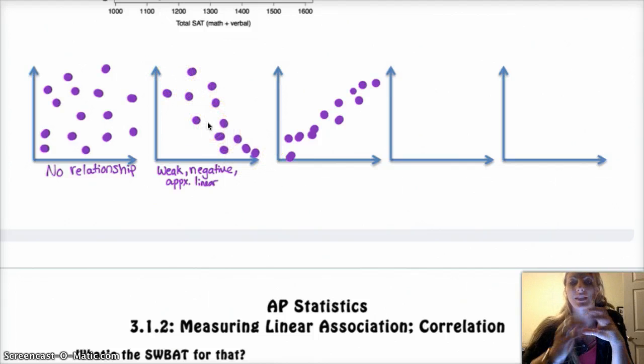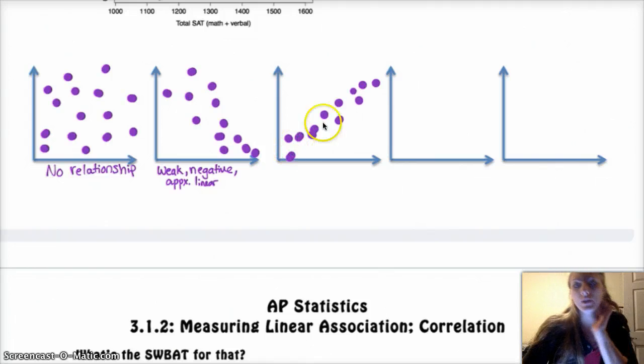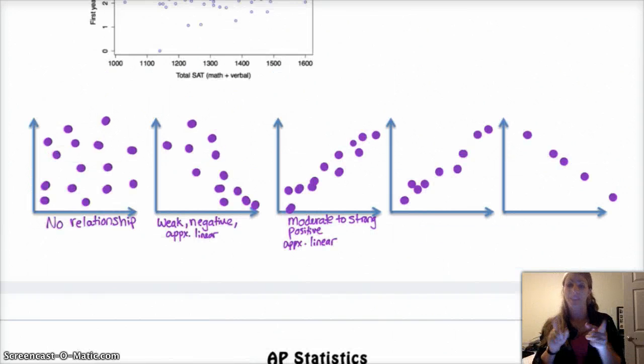This one is a pretty weak relationship. This next one is a positive relationship. It's still approximately linear, but it's a positive relationship because as x increases, so does y. And it's a little bit stronger than this one. So notice that these are more scattered. These are much closer to following the same trend. So this one I would say is a moderate to strong, positive, approximately linear relationship.